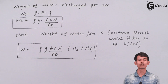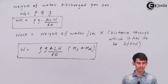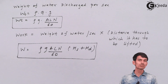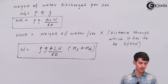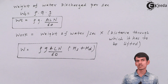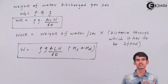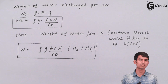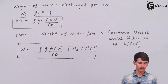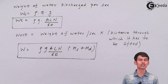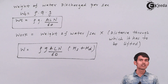So this is the formula for work done by reciprocating pumps. We have derived this formula which can be used for calculations and numericals. It's pretty simple: get the weight of water discharged per second, find the distance through which it has to be lifted, multiply them together, and you get the work done. Thank you.